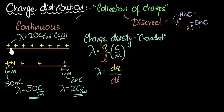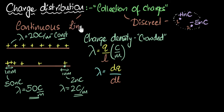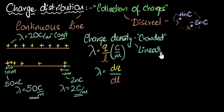If the charge is uniformly distributed, then whether you evaluate lambda at a point or over a large length, the value stays the same. Charges distributed over a line give us what we call a continuous line charge distribution, and this charge density is therefore called linear charge density — it tells you how much charge is distributed per meter along the line.